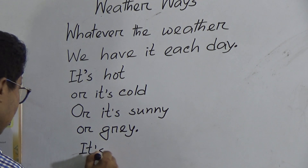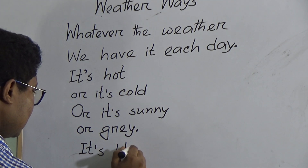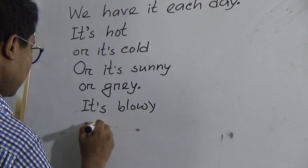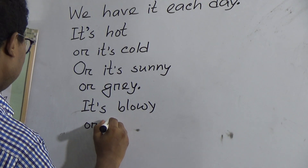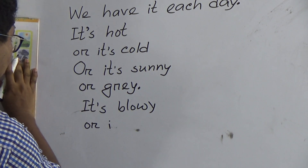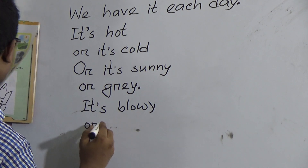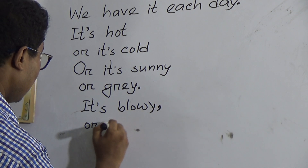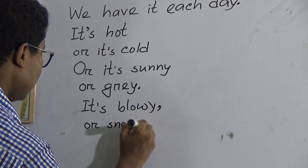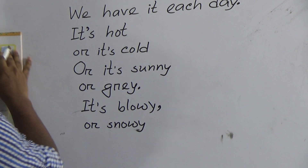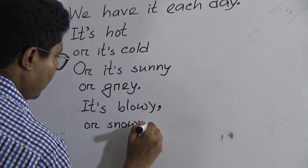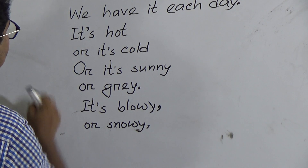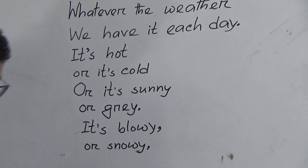Last two lines: 'It's blowy' — I will be capital — 'or it's blowing', comma, 'or snowy' — S-N-O-W-Y. We have to put a comma here. Let me read again: two, four, six, eight lines. In the exam you will write only eight lines.